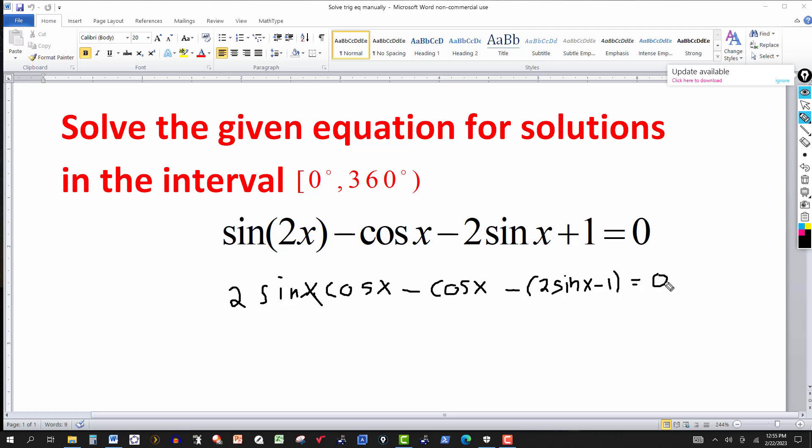So since the right side is zero, if I'm able to factor the left side into, say, two factors, then I can use the zero factor theorem. If I have a product of factors equal to zero, one factor could be zero or they both could be zero.